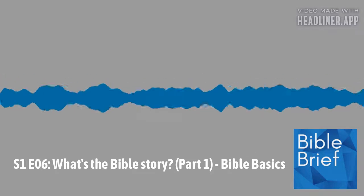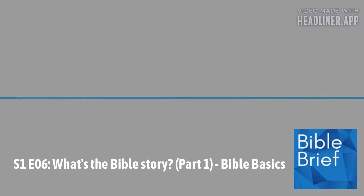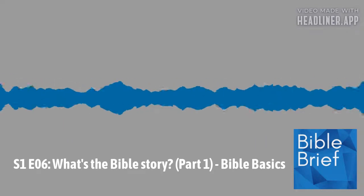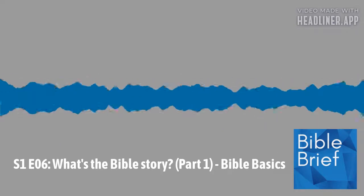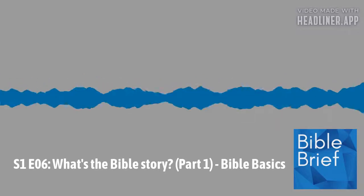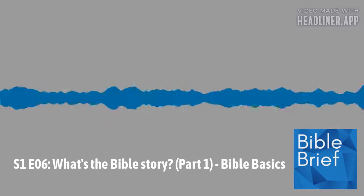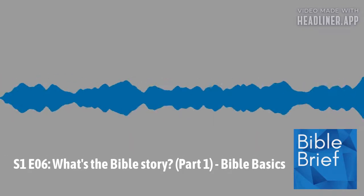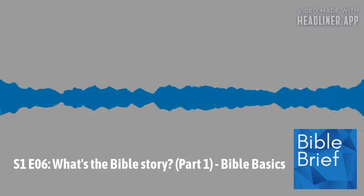With this, the Bible narrative becomes a bit more complicated. We're going to focus on some things in the Old Testament today that we can summarize using four P-words: the problem, the promise, the plan, and the prophets. Using those four words, we're going to get through the whole Old Testament in the rest of this episode.